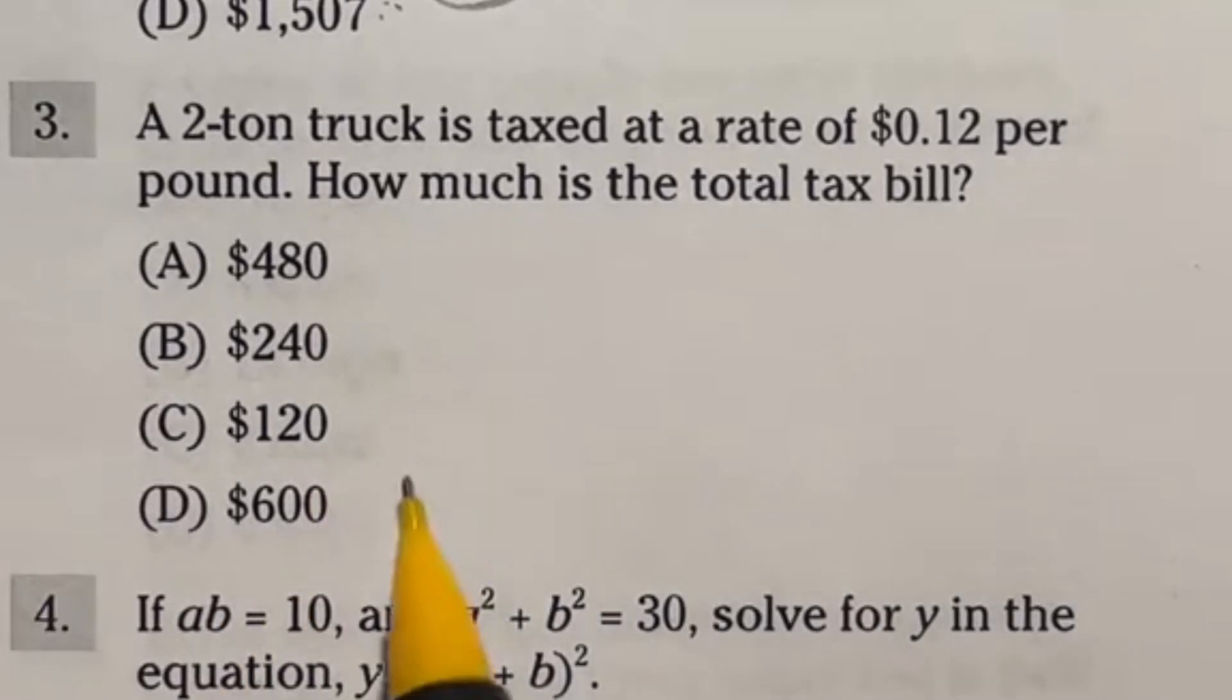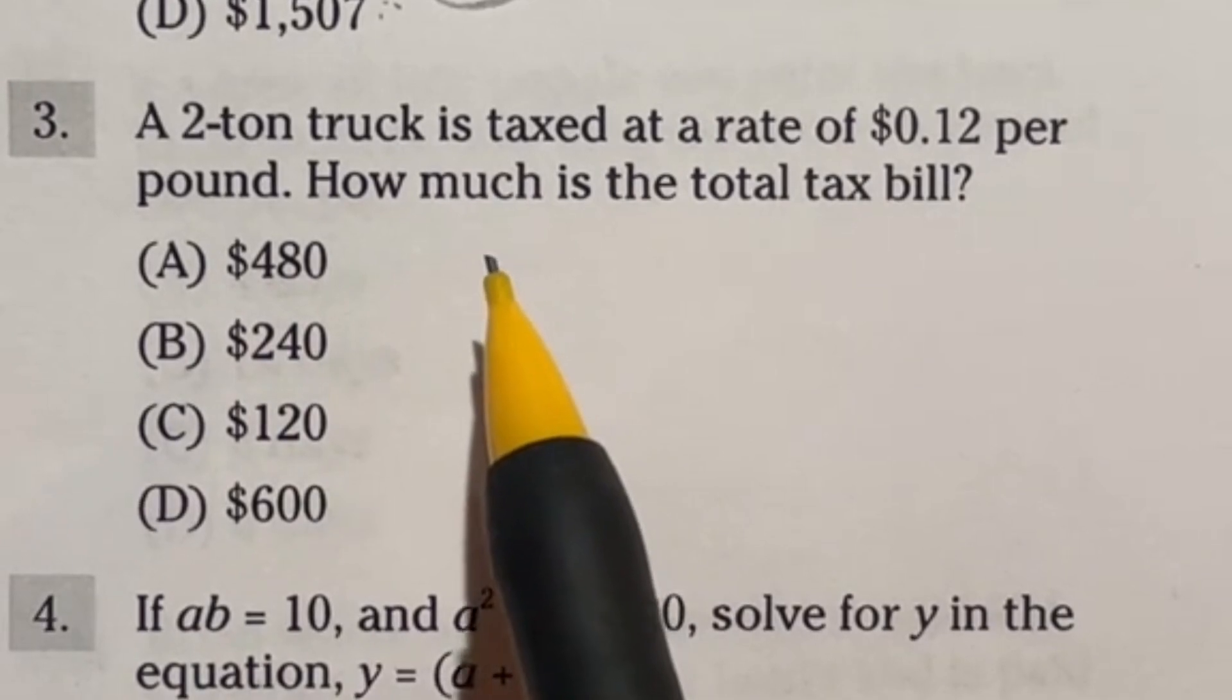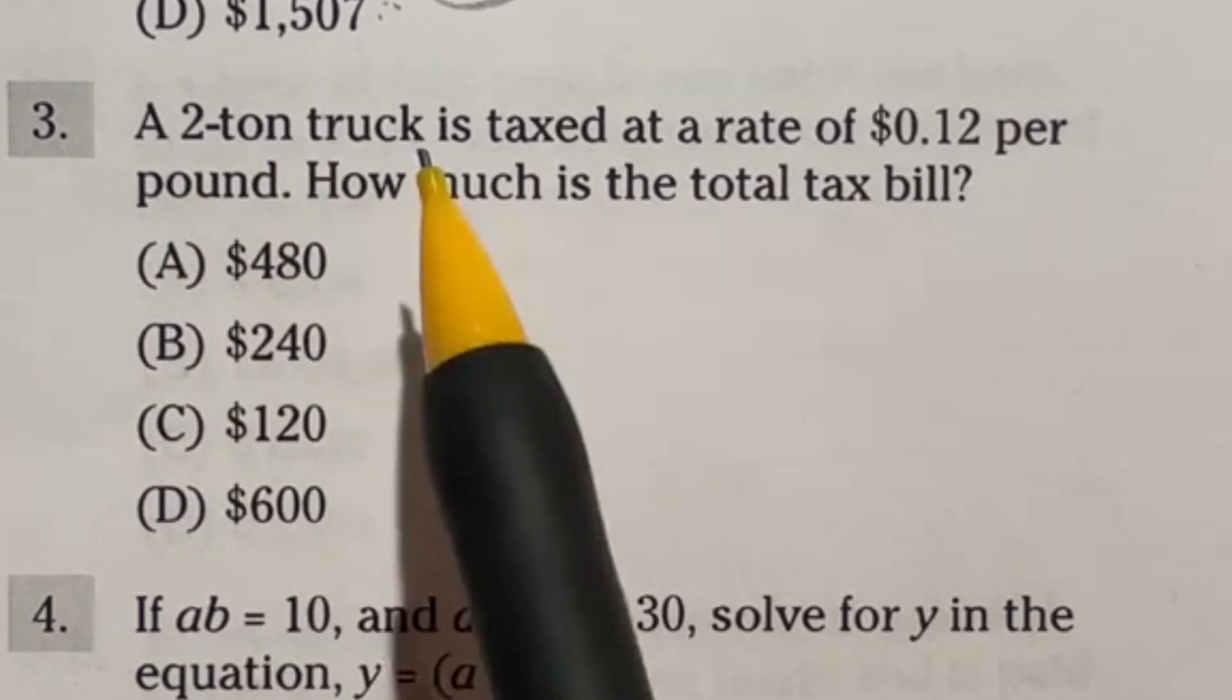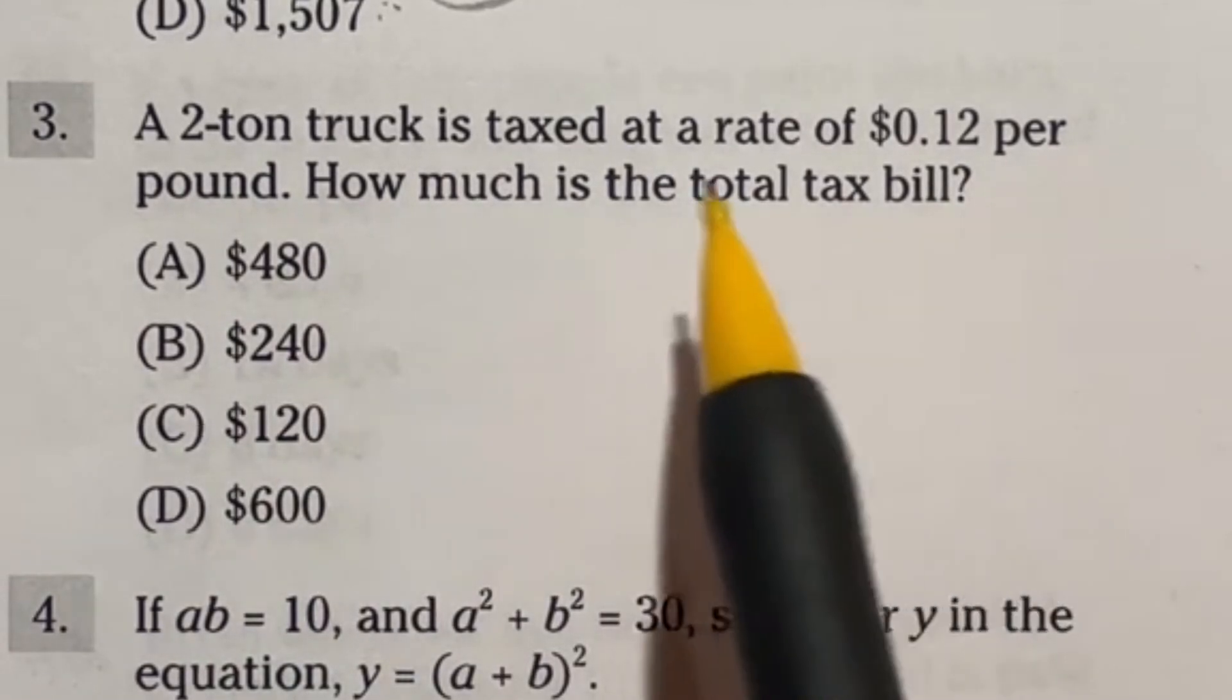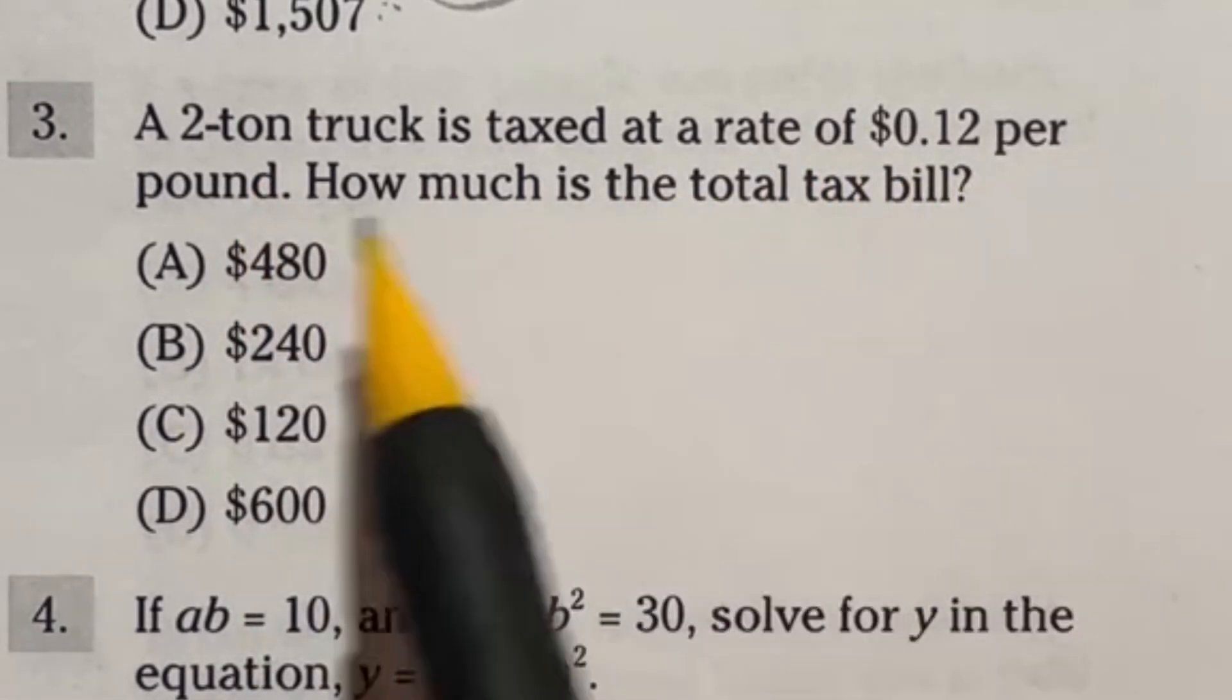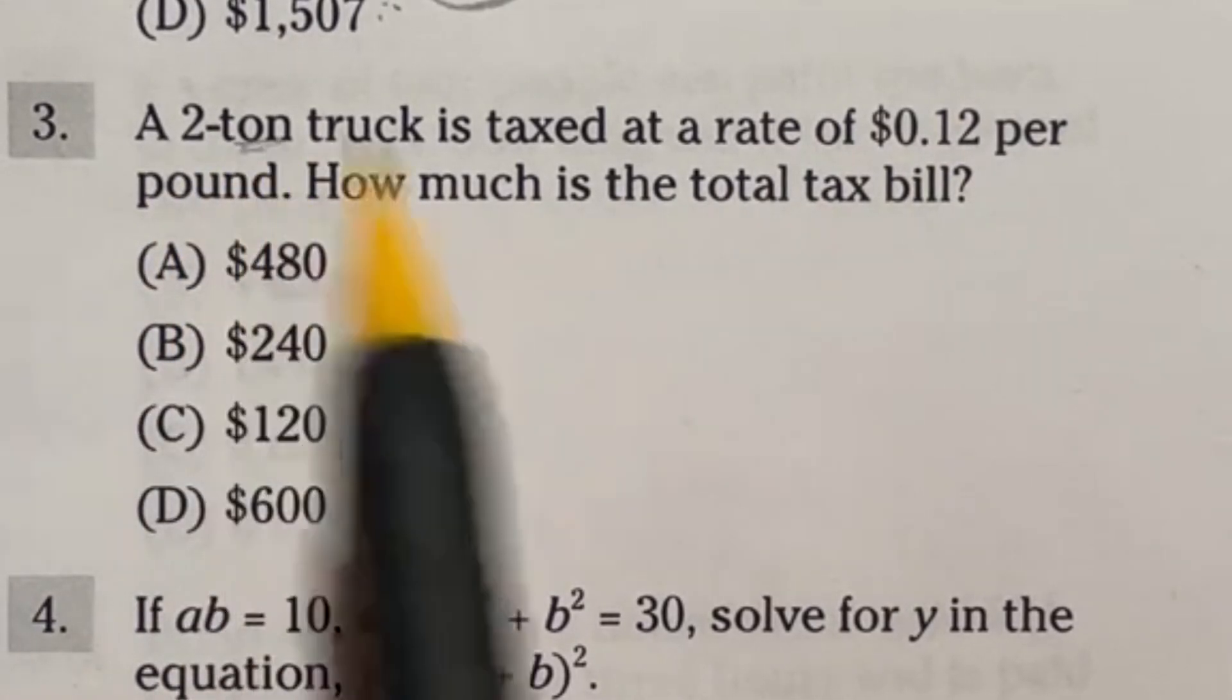So what's crazy for number three is you probably don't know this answer but not because it's difficult because you don't know how many pounds are in a ton. So it says here that a two ton truck is taxed at a rate of twelve cents per pound. How much is the total tax bill? Well if it's going to be at twelve cents per pound we just have to multiply 0.12 by however many pounds it is. So how many pounds is a ton?